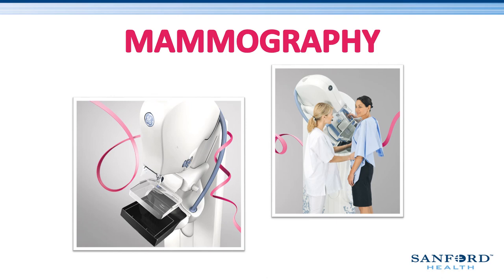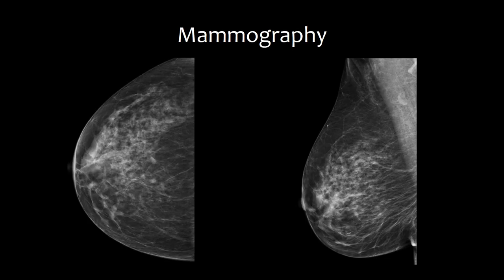Mammography plays a very important role in the detection of breast cancer. Breast cancer is one of the leading causes of death in women. The purpose of a mammogram is to detect breast cancer long before a mass would be palpable, in order to increase the chances of survival. Precise positioning in mammography is key to adequately visualize all of the breast tissue and allow for a decreased number of repeated images. Since breast tissue is especially radiosensitive, using the least amount of radiation is important.